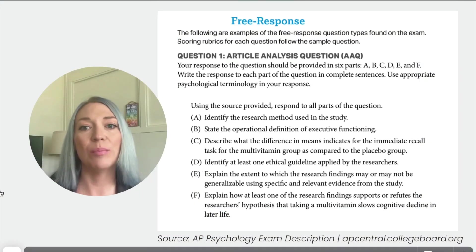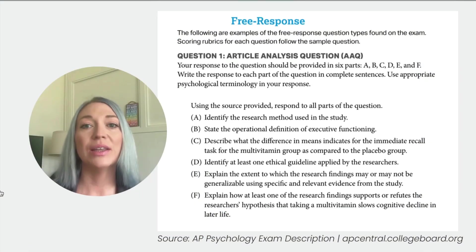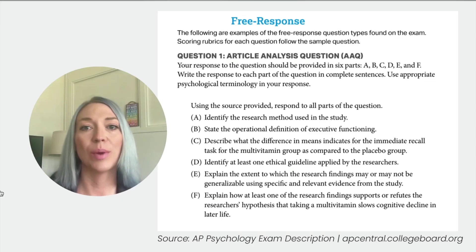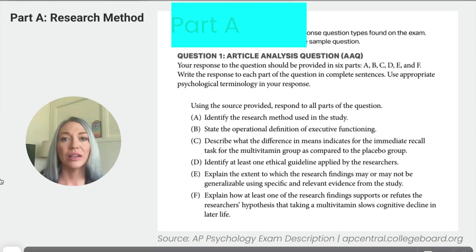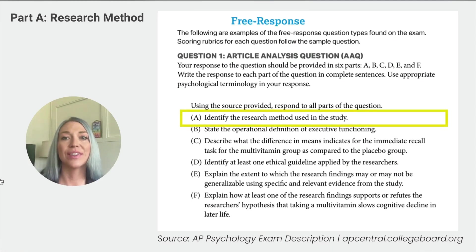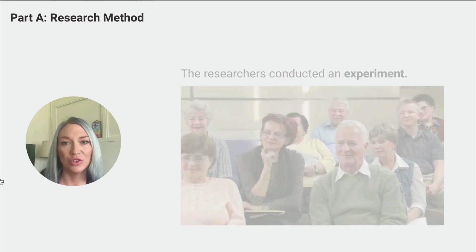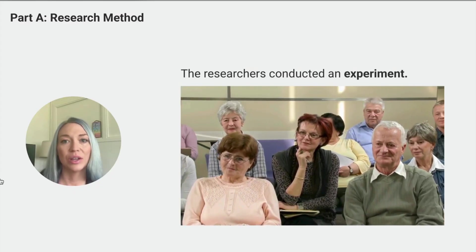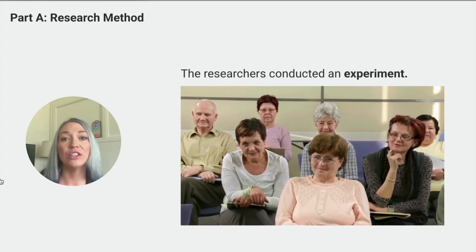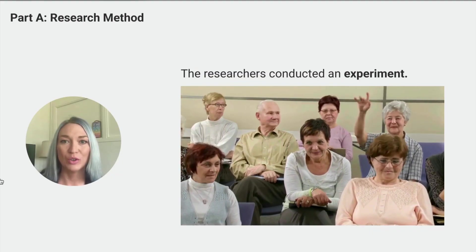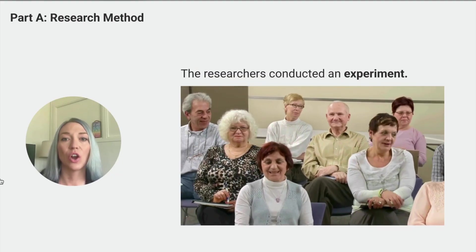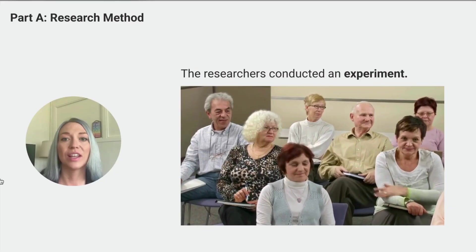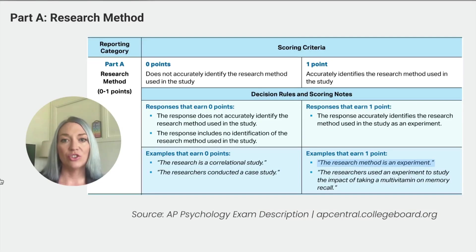If you want to follow along, please have your answer sheet or a separate piece of paper ready. Going through the process of answering this AAQ is going to help prepare you for the official AP Psychology exam. Let's formulate our answer. Part A asks us to identify the research method used in the study. In this study, the researchers conducted an experiment. We know this because participants were randomly assigned to either the multivitamin or placebo group, a hallmark of experimental research. Always look for random assignment when identifying this method. On your answer sheet, you could write: 'The research method is an experiment,' to earn one point.